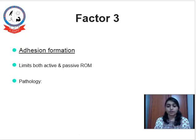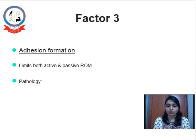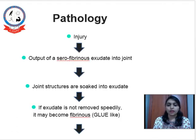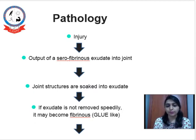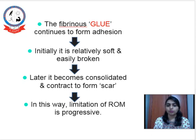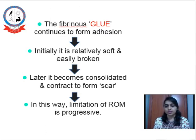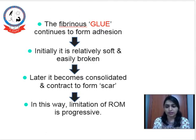Next is Factor 3, which is very important to understand. Factor 3 is adhesion formation, which limits both active as well as passive range of motion. To understand it in detail, I have included its pathology. If any injury occurs at the joint, there will be an outpouring of fibrinous exudate into the joint and joint structures become soaked in that exudate. If this exudate is not removed speedily, it may become fibrinous — called glue-like. If this fibrinous glue remains for a longer period of time, there will be formation of adhesion. Initially this adhesion is relatively soft and easily broken, but later it becomes consolidated and forms a scar. In this way, limitation of range of motion is progressive in Factor 3, that is adhesion formation.